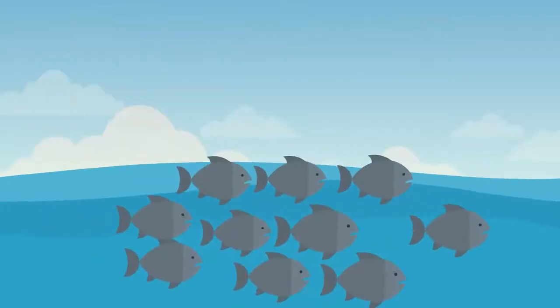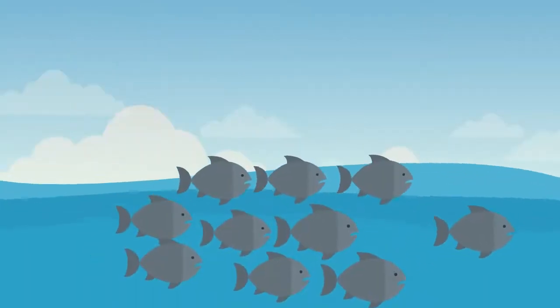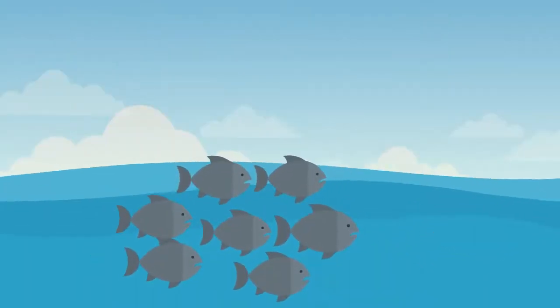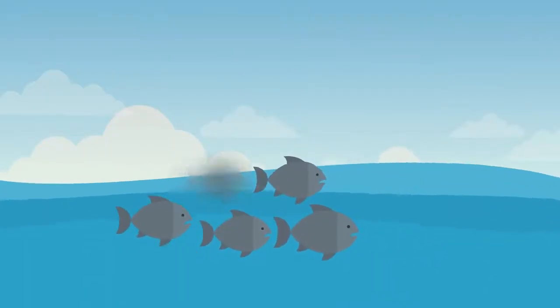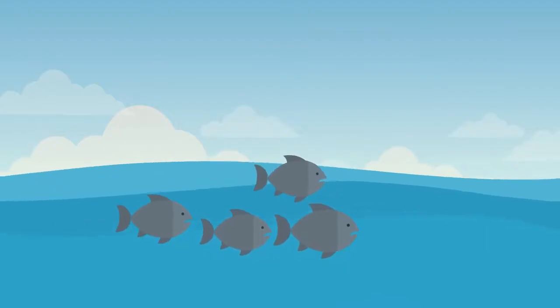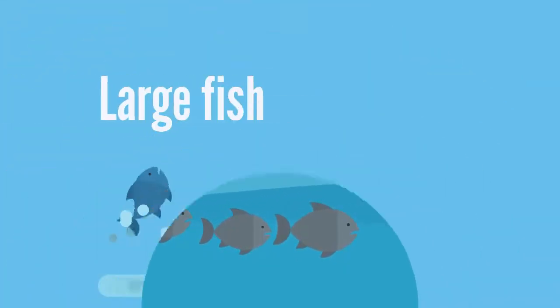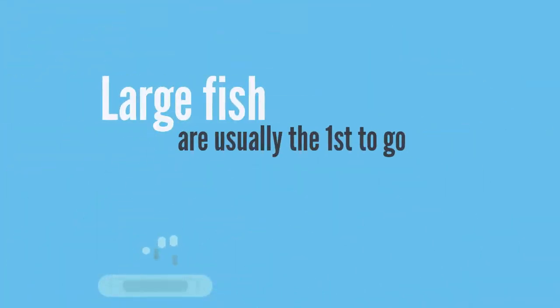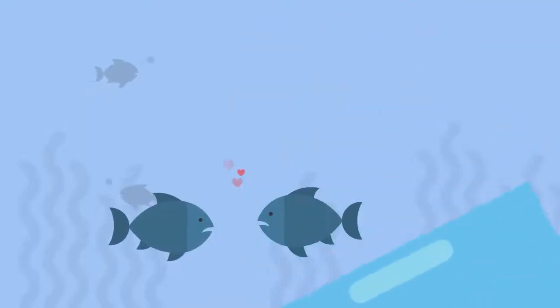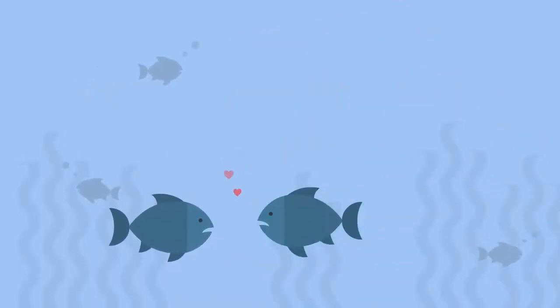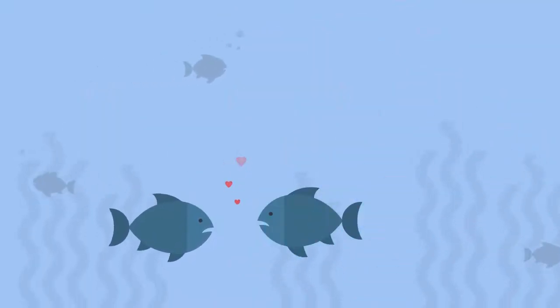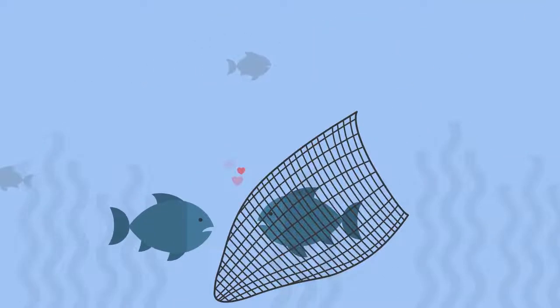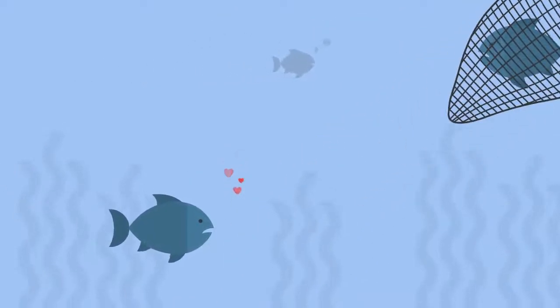Over the past 40 years, marine species have seen a decrease of 39% due to overfishing, and large fish are usually the first to go. They live a long time but are usually slow to repopulate, making it hard to rebuild their fish populations.